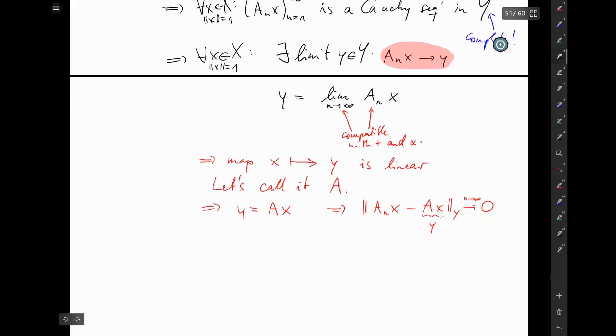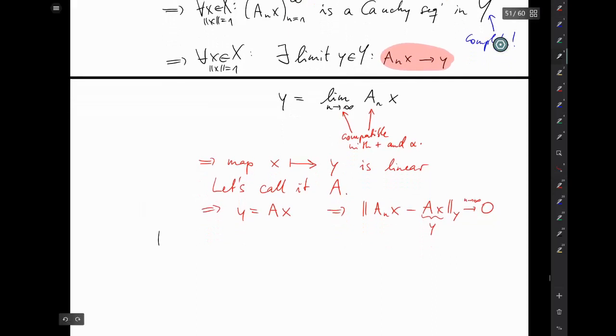We are on a good way in our proof. It remains to be shown that two things hold. First thing is A_N converges to that operator A in the sense of our L norm, and secondly the limit is in L(X,Y). Then we indeed have that our Cauchy sequence is convergent with limit inside L(X,Y).